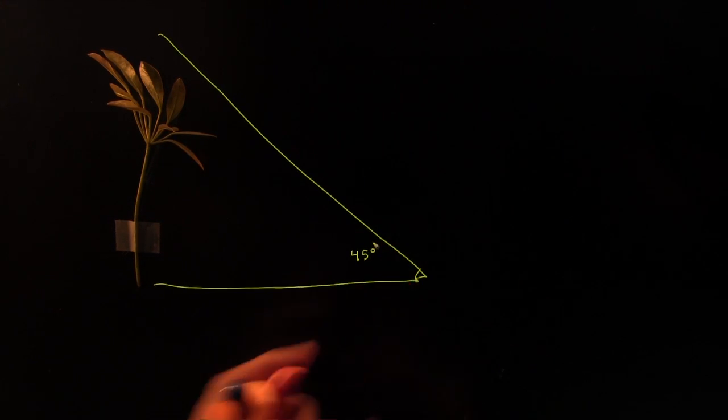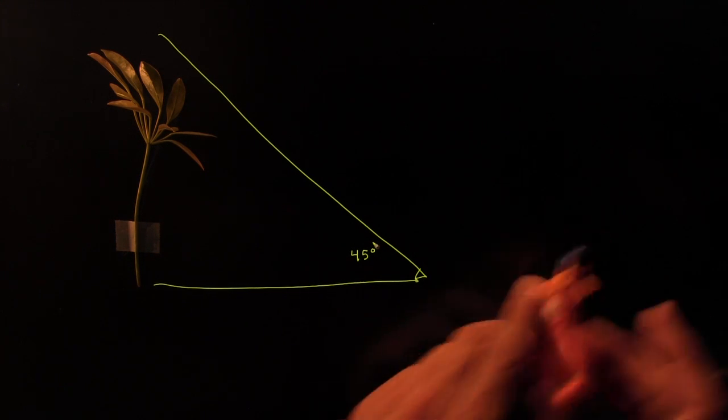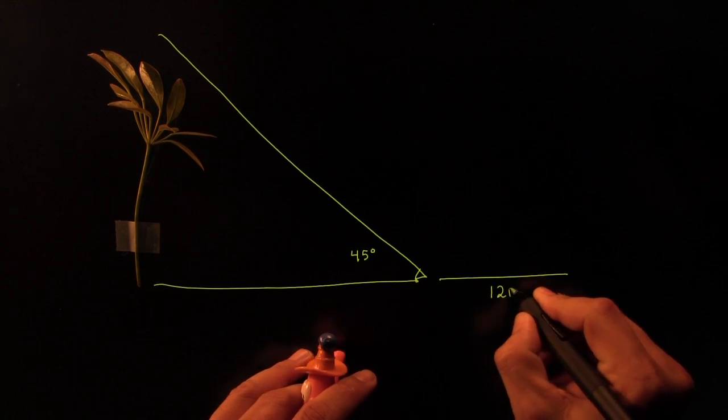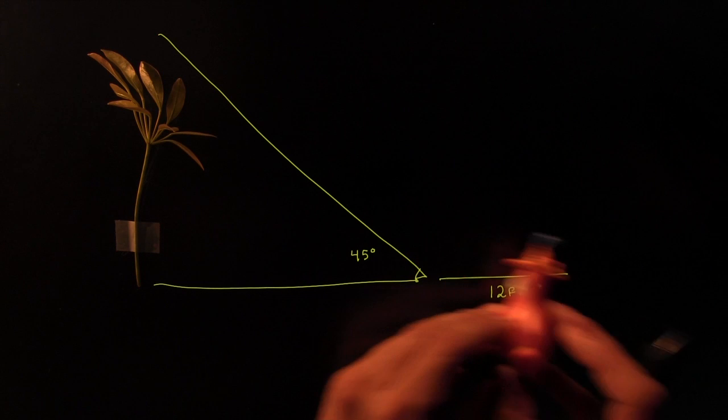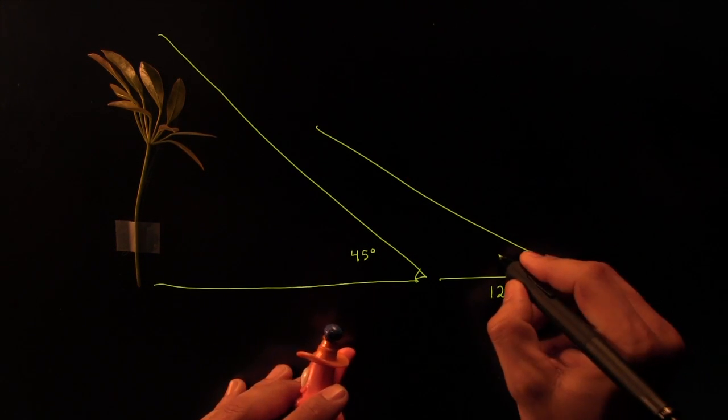Then we have our observer walk a few steps. And we measure these steps. Say we measure, I don't know, 12 feet. And then we have him look, we make sure he walks far off until when looking up causes an angle of 30 degrees.